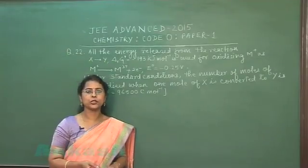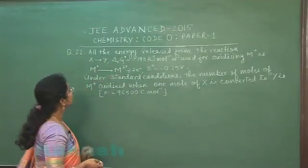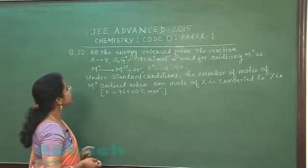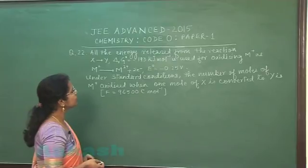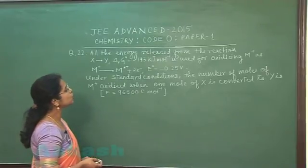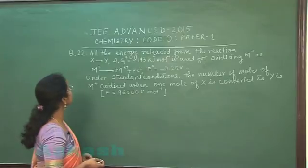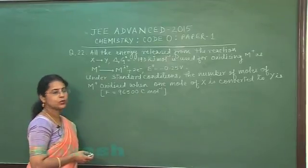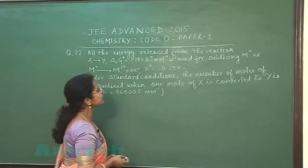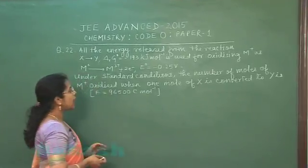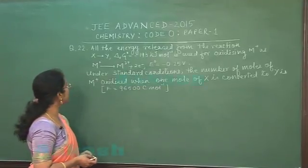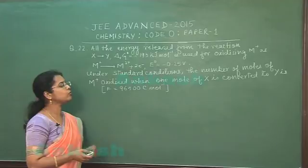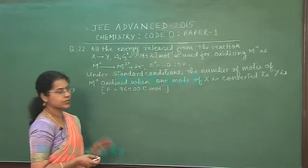Moving to the next question of today's paper, question number 22. All the energy released from the reaction X to Y, delta G0 of reaction is minus 193 kilojoule per mole, is used for oxidizing M positive to M3 positive plus 2 electrons. Electrode potential is given minus 0.25 volt. Under standard conditions, the number of moles of M positive oxidized when 1 mole of X is converted to Y is.